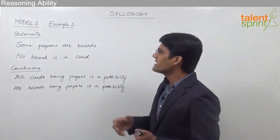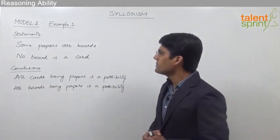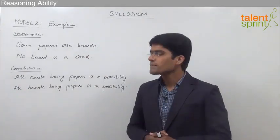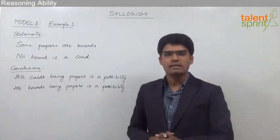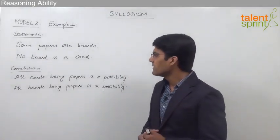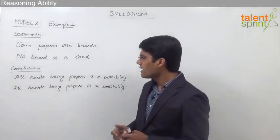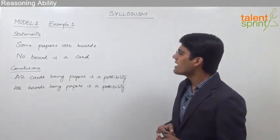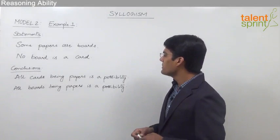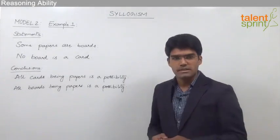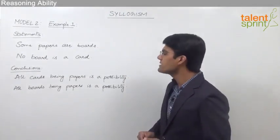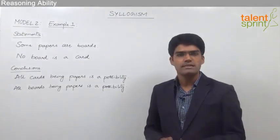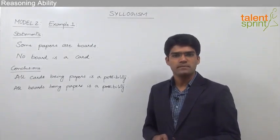The statements here are: some papers are boards, and no board is a card. The given conclusions are: the first is all cards being papers is a possibility, and the second conclusion is all boards being papers is a possibility.